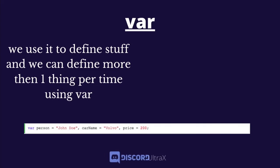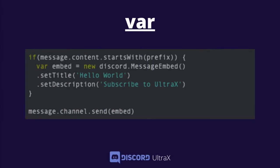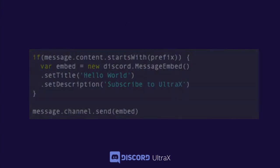We use variables to define stuff, and we can define more than one thing using var at a time. As you can see, there is var person equals 'John Doe', and then car name and price — you can just do it like that using var. Var has a global scope, meaning if you define something using var inside a block — between brackets or parentheses — you can still use it outside them. Here I made var embed equal new MessageEmbed inside a block, and after the bracket closes I use message.channel.send(embed) and it still works.